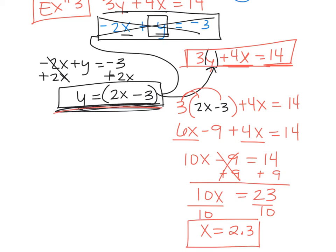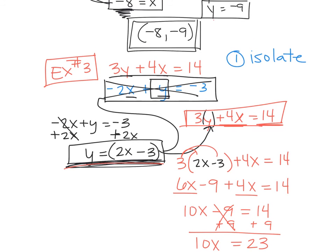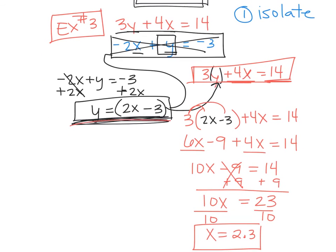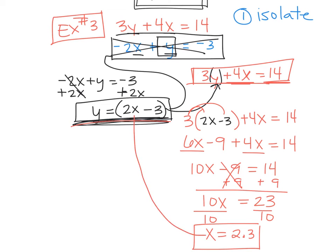Now, you have options here for where you plug that X in to get your Y. But which would be the best equation of the three that we have? Which equation is the best one to plug an X value into? It's always the isolated one. So if you look at our three equations, the X getting plugged in here is going to be your easiest. So we're going to say Y equals 2 times our X value, 2.3 minus 3. Then you simplify that. Y equals 4.6 minus 3, which means Y is 1.6.